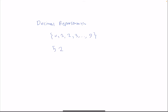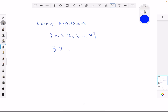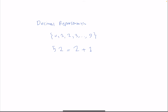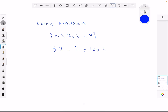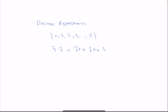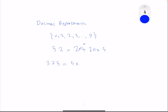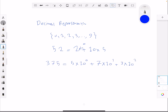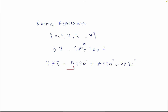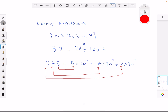For example, 52 has a value of 2 plus 10 times 5. Each digit's position corresponds to a power of 10, with the rightmost digit corresponding to 10 to the power of 0, which is 1. So 2 here is 2 times 10 to the 0. For example, 375 is 5 times 10 to the 0, plus 7 times 10 to the 1, plus 3 times 10 to the 2 — giving us digits 5, 7, and 3 at powers 0, 1, and 2 respectively.